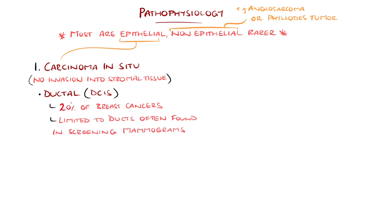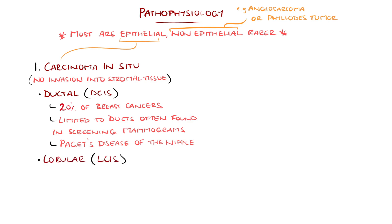Often, ductal carcinoma in situ is only discovered in mammograms as part of screening. Paget's disease of the nipple is a form of ductal carcinoma in situ that extends into the skin in the region of the nipple and areola. The other form is lobular carcinoma in situ, which originates in the lobules and is bilateral in 20–60% of cases.